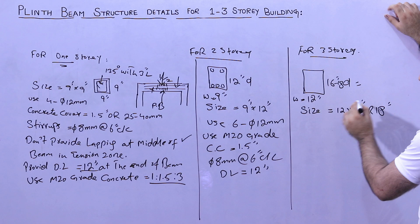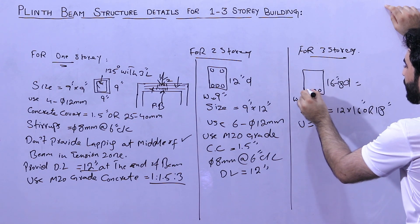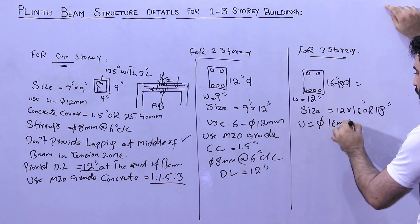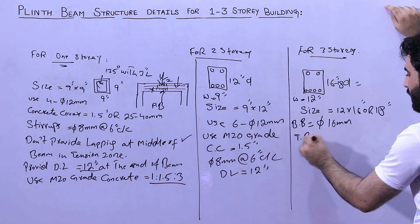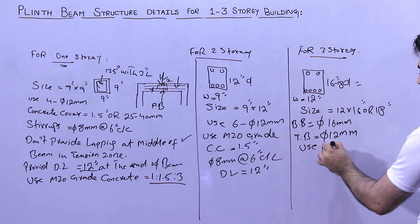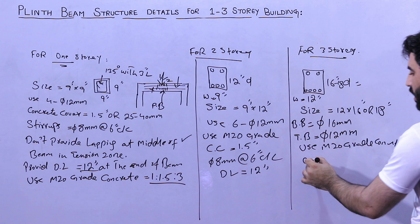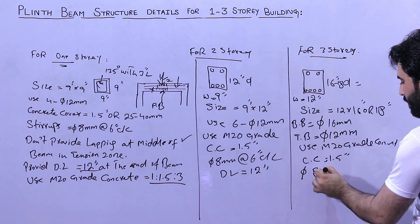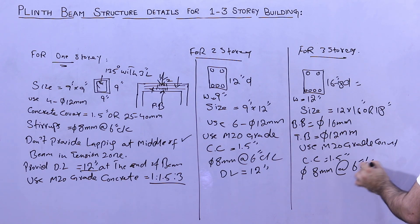Use six numbers of steel rods: four at the bottom and two at the top. Bottom bar diameter should not be less than 16 millimeter, and top bar diameter should not be less than 12 millimeter. Use M20 grade concrete, concrete cover should be 1.5 inches. Use eight millimeter diameter stirrups with spacing of six inches center to center.